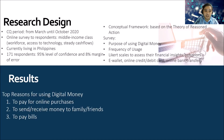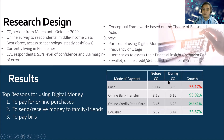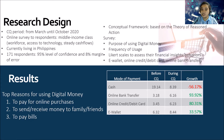For the results of the research, the top reason for using digital money is to pay for online purchases. Second is to send and receive money to family and friends, and third is to pay bills. Regarding frequency, cash was used 19.14 days out of 30 days per month before the community quarantine period, but during the pandemic, cash usage dropped to only 8.39 days out of 30 — a significant decrease of 56.17%.